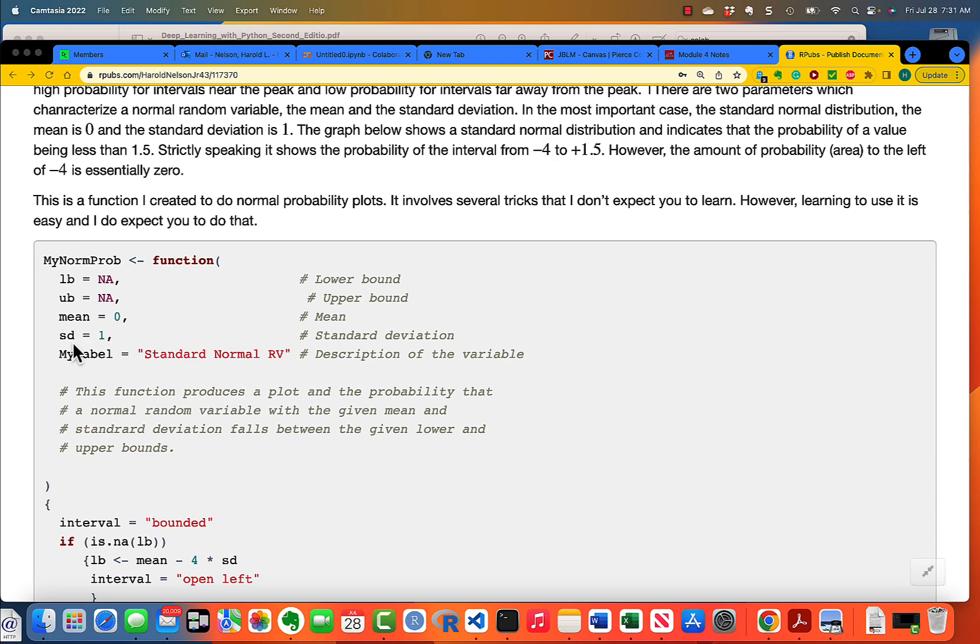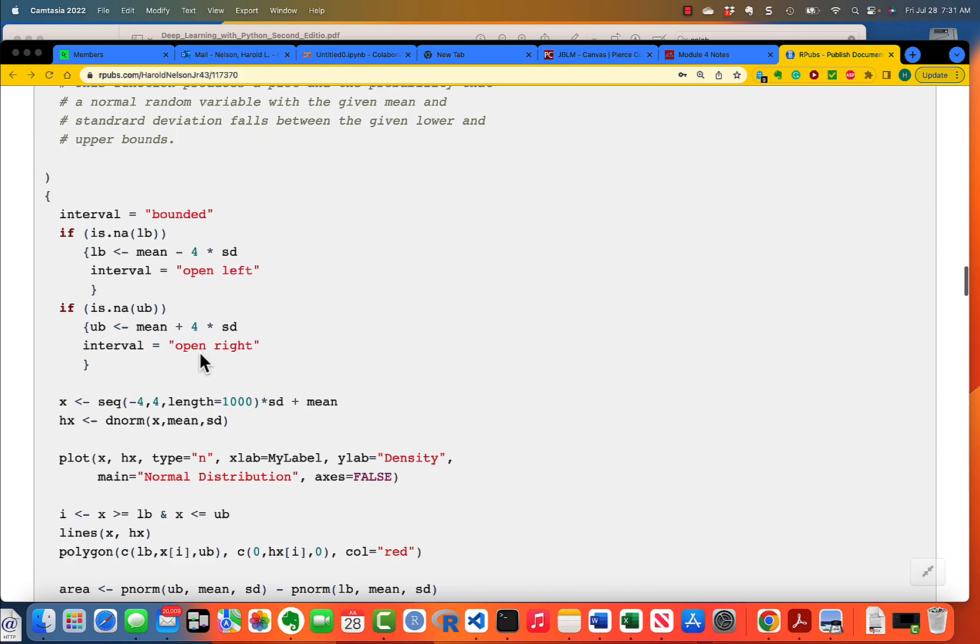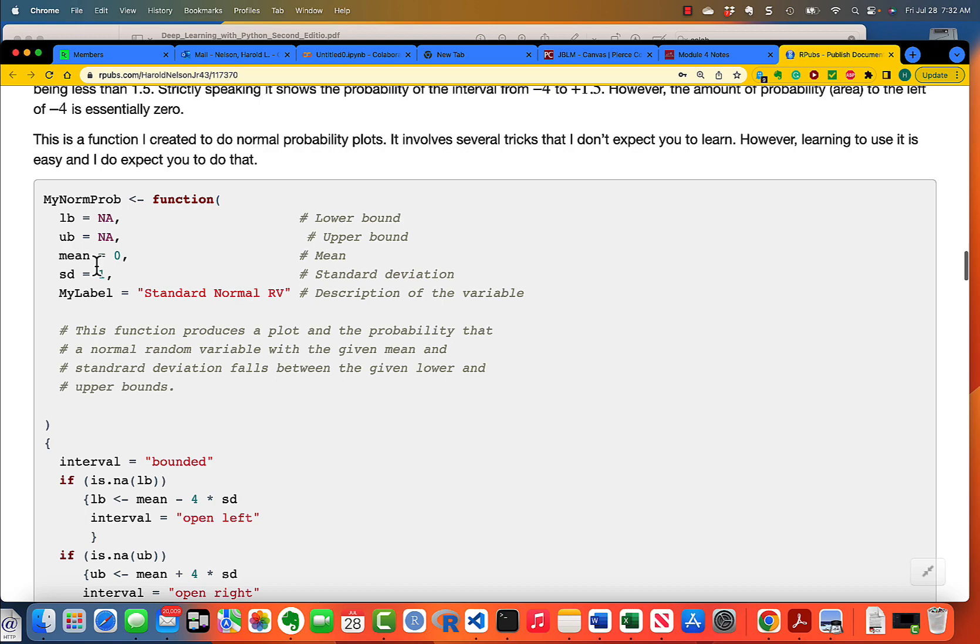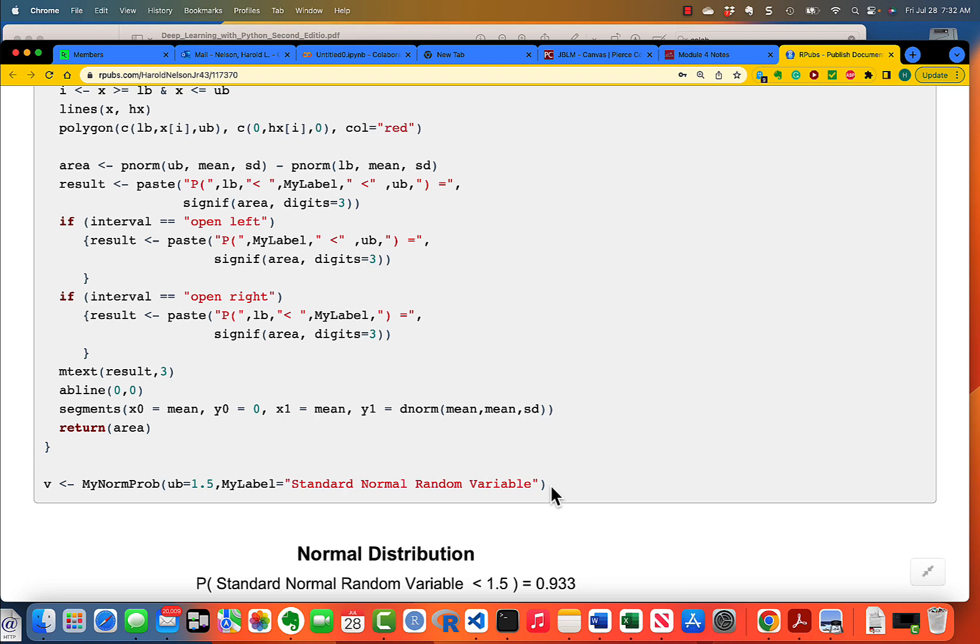And there are five things that you can specify. You can specify a lower bound to your interval, an upper bound to your interval. You can specify the mean of the normal probability distribution, and by default, we accept zero, but you can override the zero. And by default, the standard deviation is one, although you can, you certainly would, in almost every circumstance, change the standard deviation to whatever you've got. And then there's a label. You can describe that. And here's the code. And if you want to play with this thing, you have to copy the whole thing, starting from here, at myNormProb.